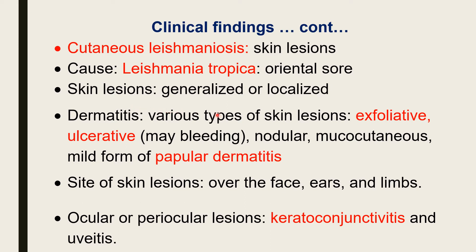The skin lesions are either generalized all over the body or localized in some part of the body. Various forms of dermatitis are also observed and various types of skin lesions are seen: exfoliative lesions — that is hypertrophy of the skin and exfoliation of the crust — ulcerative, ulceration, granulomatous, some may bleed. There may be nodules on the skin. The mucocutaneous form is rarely seen, with lesions on mucous membrane and at the junction of mucus and skin. In some cases, mild papillary dermatitis is also observed.